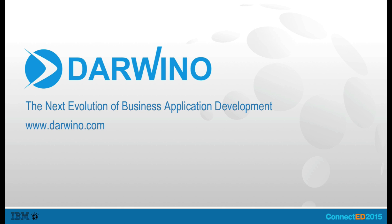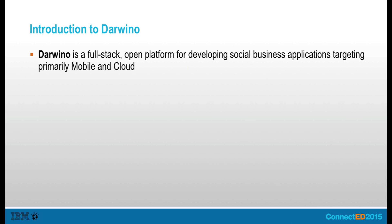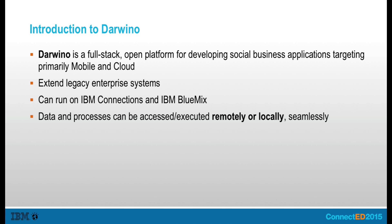This demo shows how Darwino can quickly and seamlessly extend a native IBM Connections application and make it accessible offline on any mobile device. Darwino is a full-stack, rapid, mobile application development platform that helps developers build mobile, social, and cloud-ready business applications that extend legacy enterprise systems and can run on IBM Connections and IBM Bluemix. What makes Darwino apps unique is not only that they are cross-platform, but most importantly, they will seamlessly work offline the same way as online, with no coding.